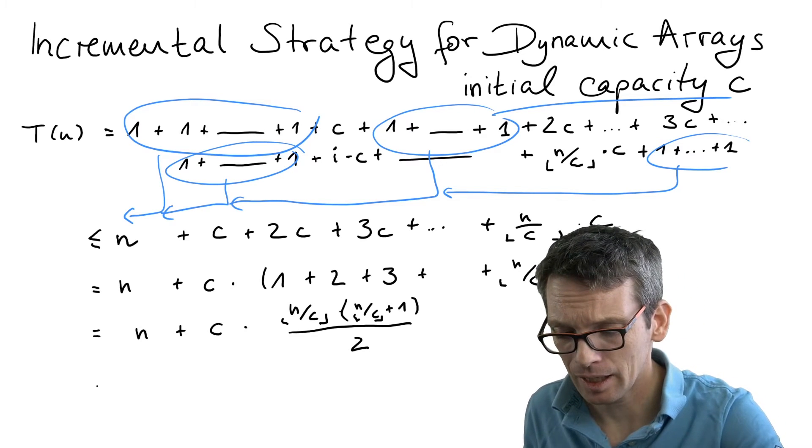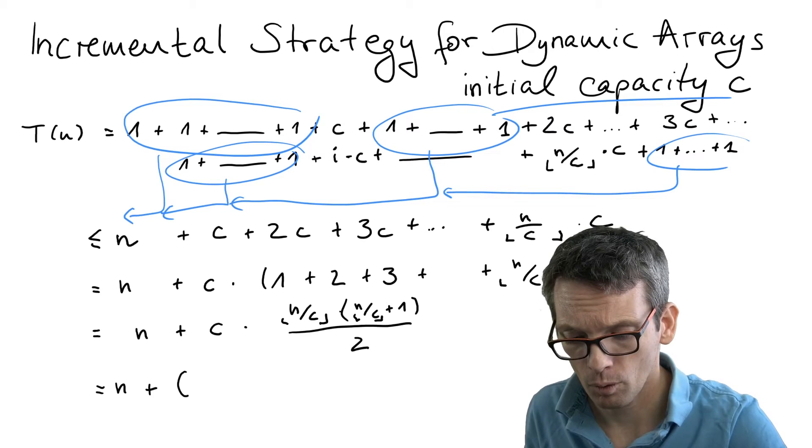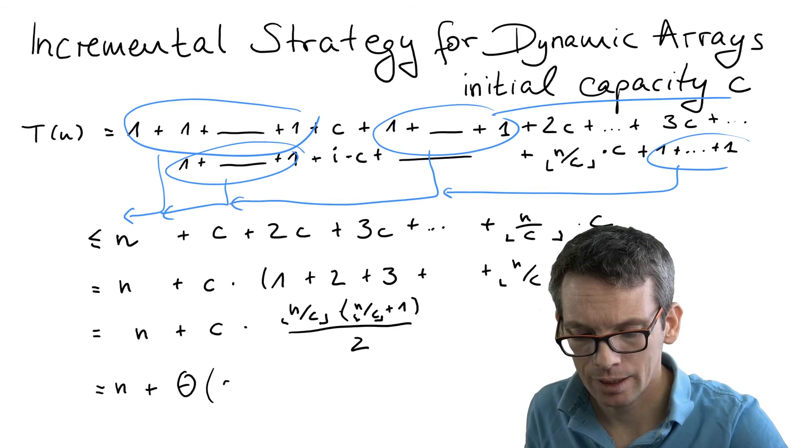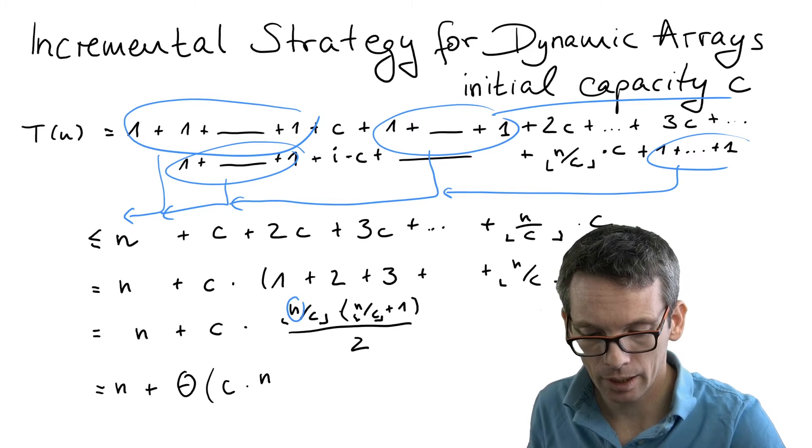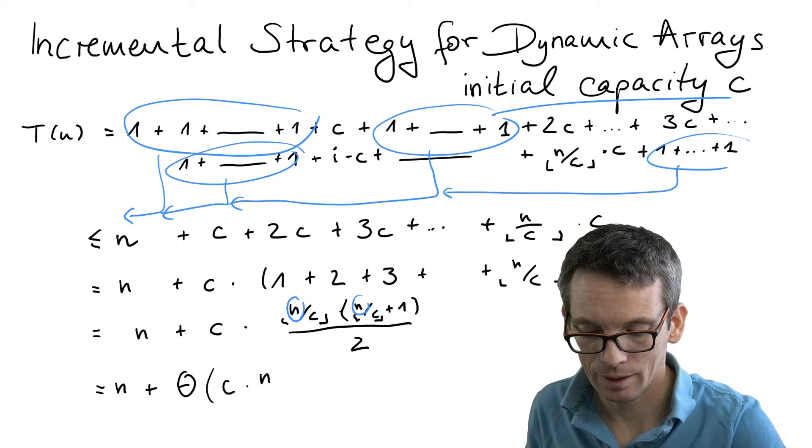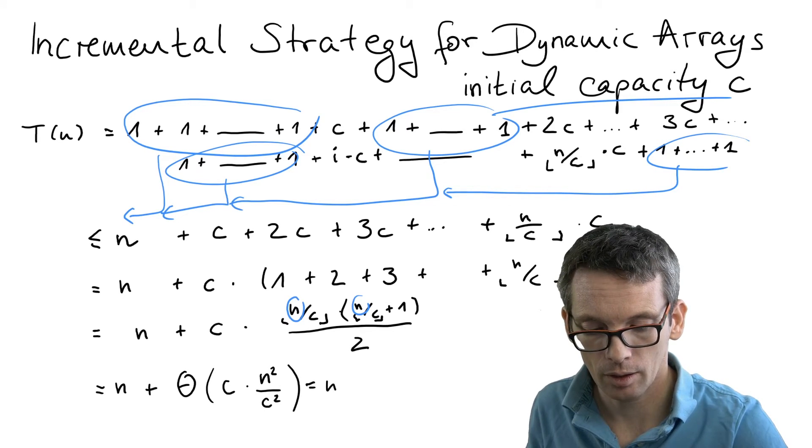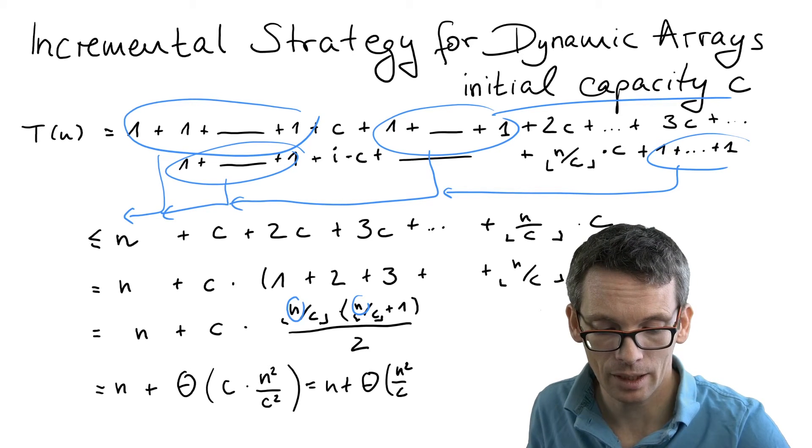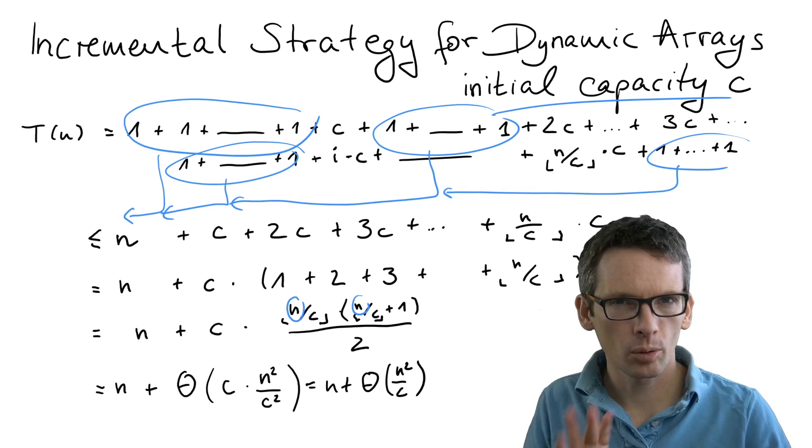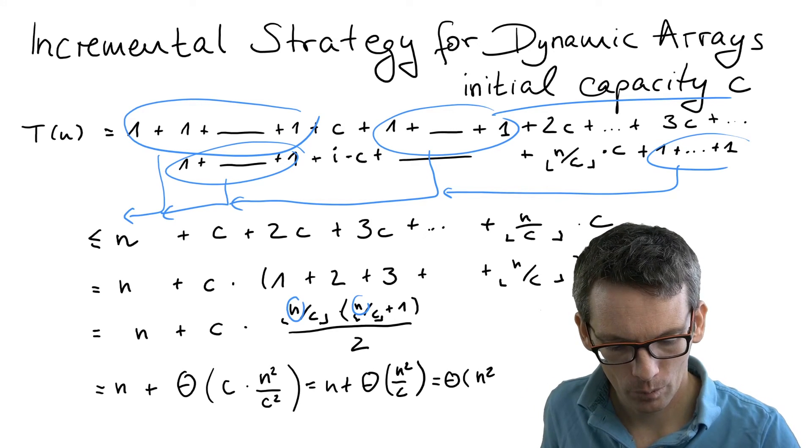Now this is n, and now we're interested in the order. We have c times—we have two n terms here, n and n—so that's n squared. Divided by—we have two c terms, c squared. So that's n plus order n squared divided by c. We assume c is a constant, so this is simply order n squared.